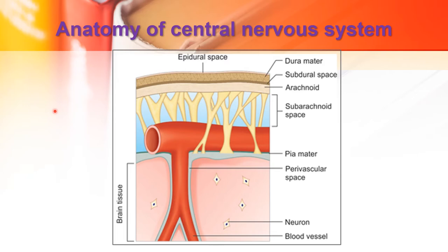We have discussed in the earlier slides about the leptomeninges and the dura mater. This is the dura mater, the tougher one — durable, you can remember. Then this is the arachnoid mater, and this is the pia mater. In the subarachnoid space there is fluid as well as the vessels. This is the epidural space, this is the subdural space, and this is the brain tissue. So this is a brief reminder of the structure of the brain.